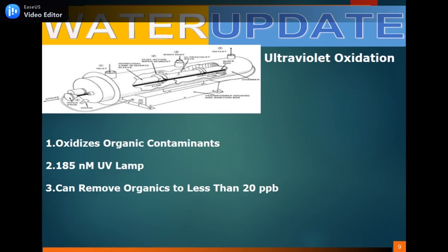The next method is UV oxidation, which oxidizes organic contaminants using a 185-nanometer UV lamp. It can reduce organics to less than 10 ppb.